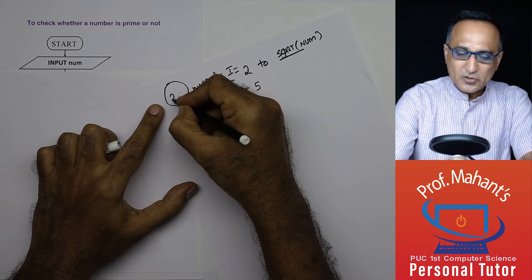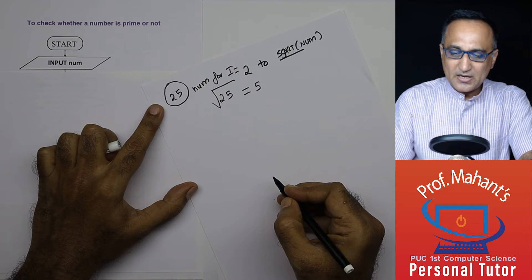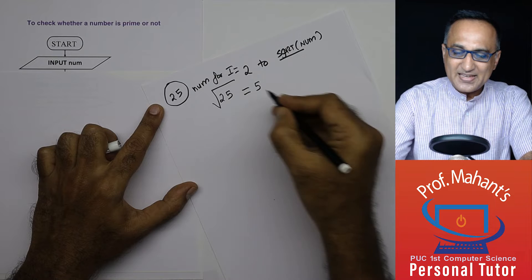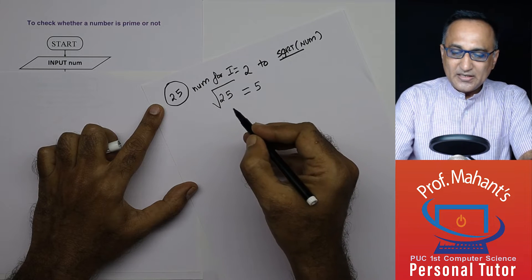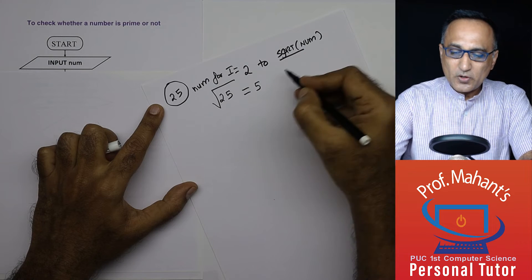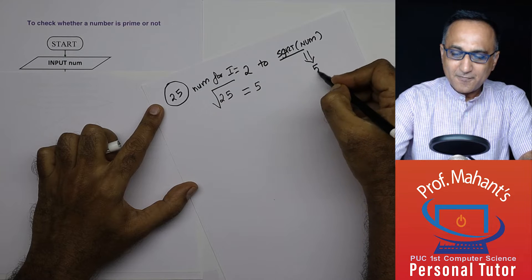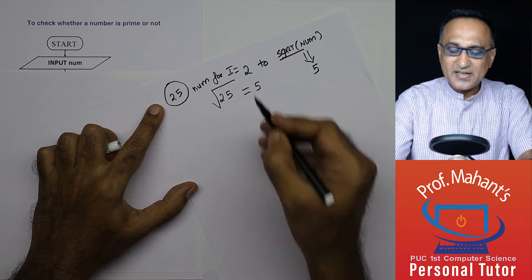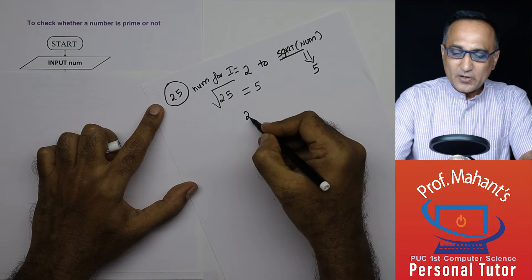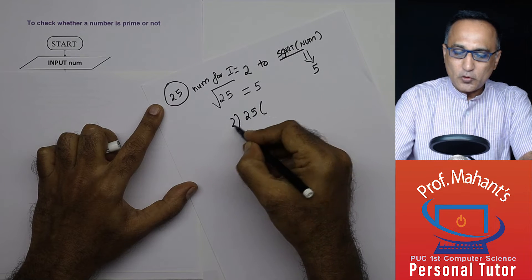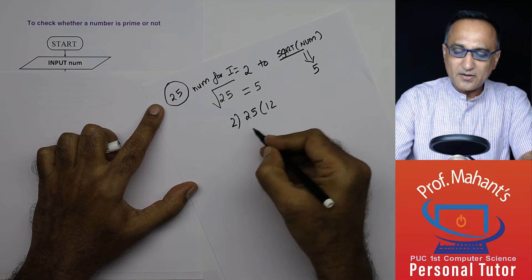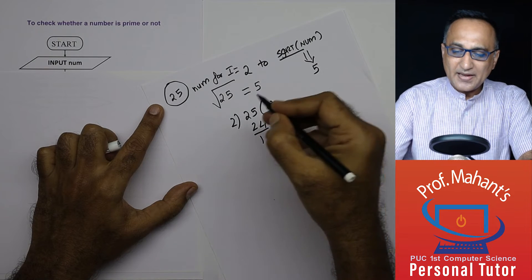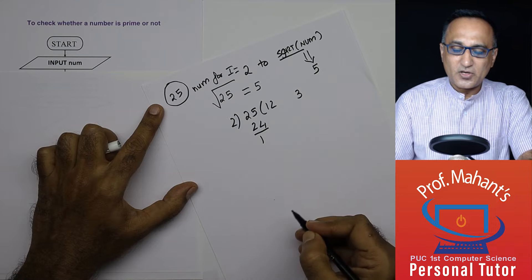I'll say for i is equal to 2 to the square root of the number, I shall keep checking one number at a time to see whether that number is divisible. Let me explain better. Let's take the input number as 25. Number is 25. Then what I'm going to do is I'm going to start from i is equal to 2. 25, what is the square root of 25? It is 5. My number is 25, square root is 5. Initially i is 2. If I divide 25 by 2, the remainder happens to be 1. So I continue. I increase i by 1, i becomes 3.